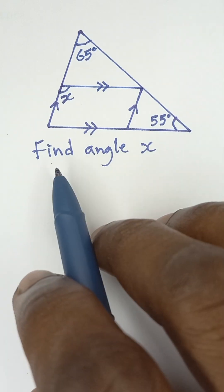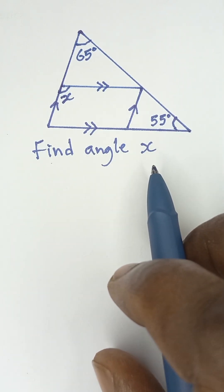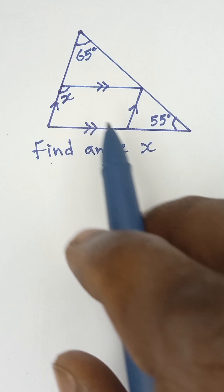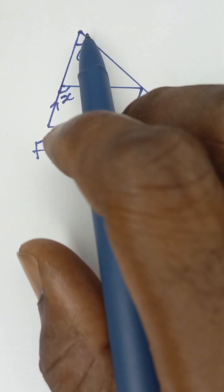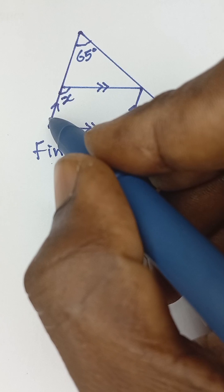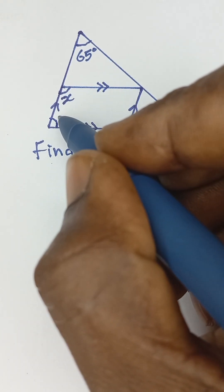Alright, the question here says find angle x. Now if you look at this diagram very well, this is a triangle, so let's take the angle here as angle y.